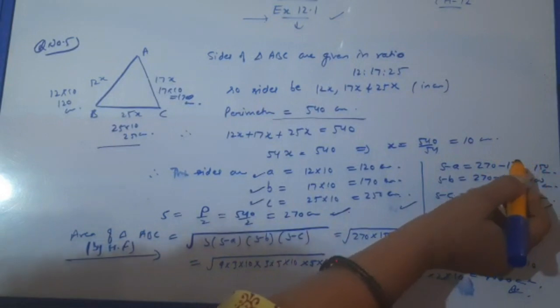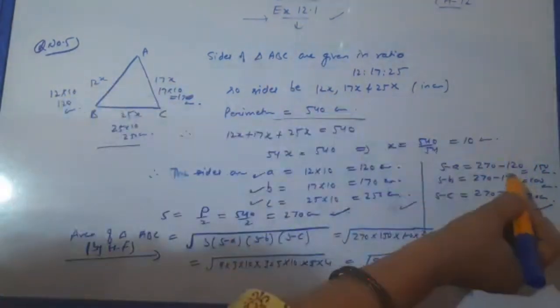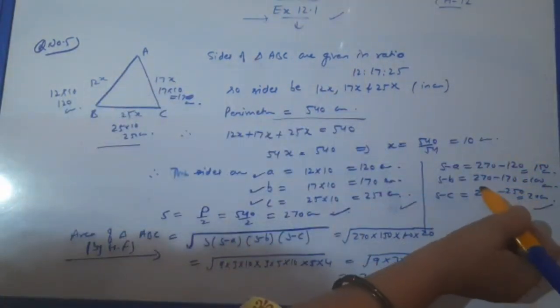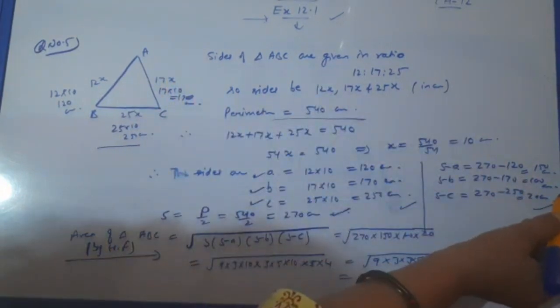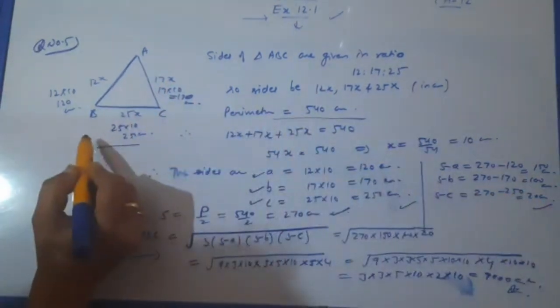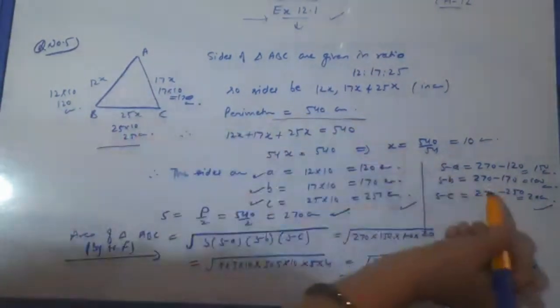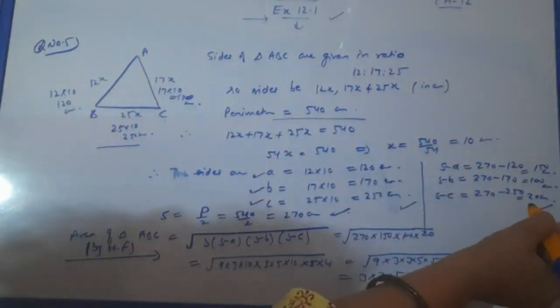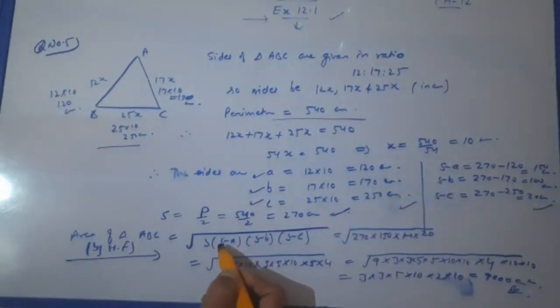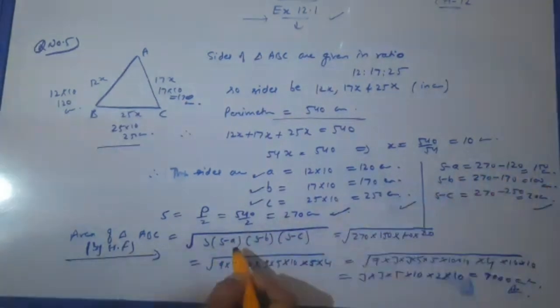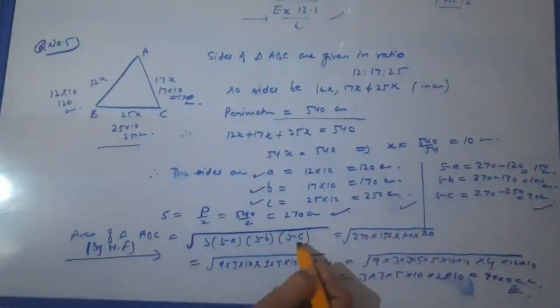S is 270. S was 270. Now, (270 - 120), 120 was the first side, that is equal to 150 cm. (270 - 170) that is equal to 100 cm. And (270 - 250) is equal to 20 cm.